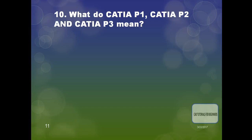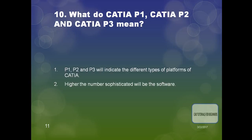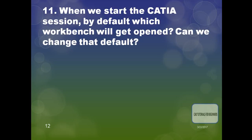The next question is: what do CATIA P1, P2, and P3 mean? P1, P2, and P3 indicate different types of platforms of CATIA. The higher the number — P1, P2, P3 — the more sophisticated the software.